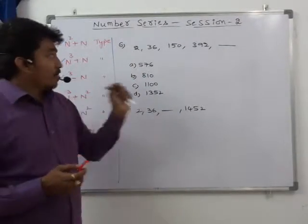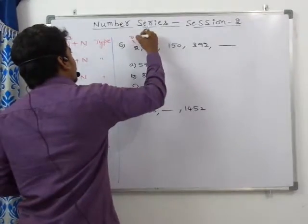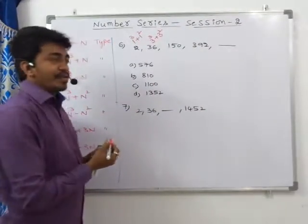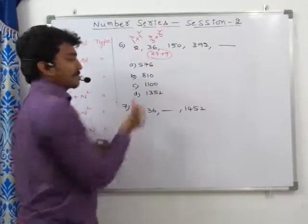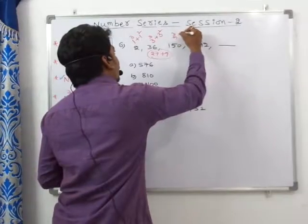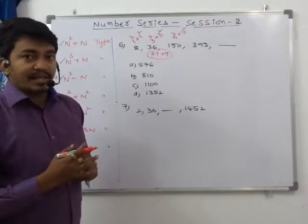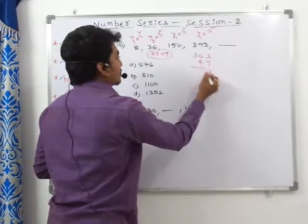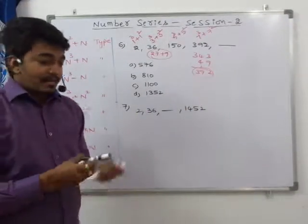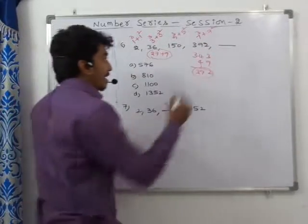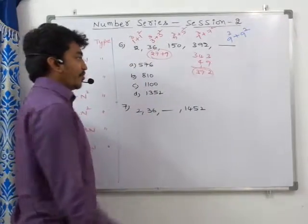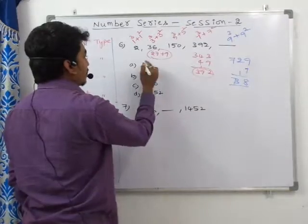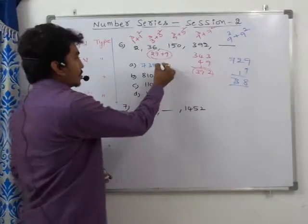We can write: 2 = 1³ + 1², 36 = 3³ + 3² (27 + 9), 150 = 5³ + 5² (125 + 25), 392 = 7³ + 7² (343 + 49). According to this symmetry, the next term uses odd number 9: 9³ + 9² = 729 + 81 = 810. Wait — checking the options, 738 is listed. Let us recalculate: 9³ = 729, 9² = 81, sum = 810. One of the options given is 738; the correct value by this pattern is option 8 (738 might be a transcription issue).